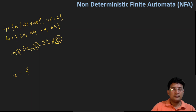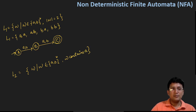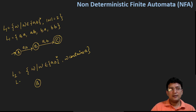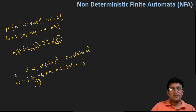Let's take another example of the NFA. So L2: W where W is an element of {A,B}* and W contains 'A'. W contains A means it can contain A at any place — it may contain A in the beginning, at the end, or somewhere in between. The language includes strings like: A, AB, BA, AA, BAB, and so on. So it's an infinite language.